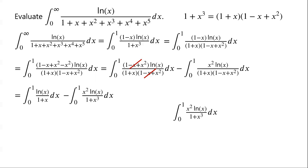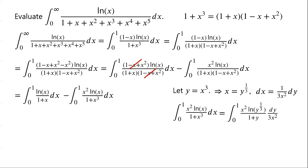Now we consider the second integral. The numerator has x² and the denominator has x³, so we let y equal x³. Then x equals y to the power of 1/3, and dx equals 1 over (3x²) dy. So we can now write this as the integral from 0 to 1 of x² times ln(y^(1/3)) over (1 plus y) times dy over (3x²). The x² terms cancel, and since ln(y^(1/3)) equals (1/3) ln(y), we get (1/9) times the integral from 0 to 1 of ln(y) over (1 plus y) dy.